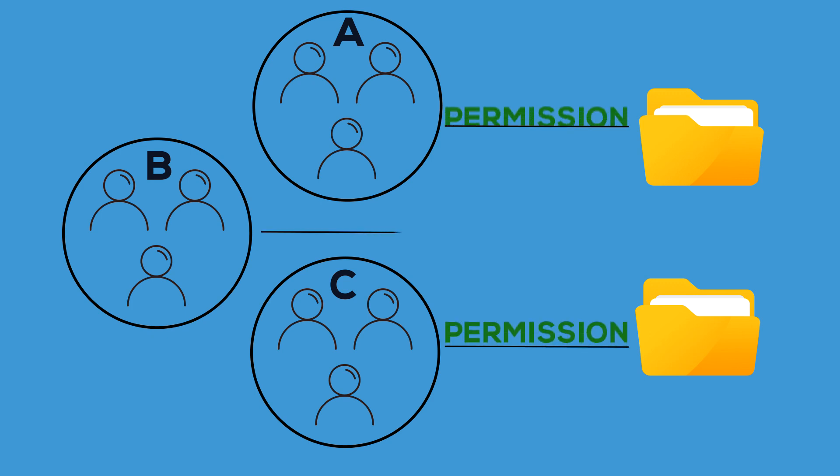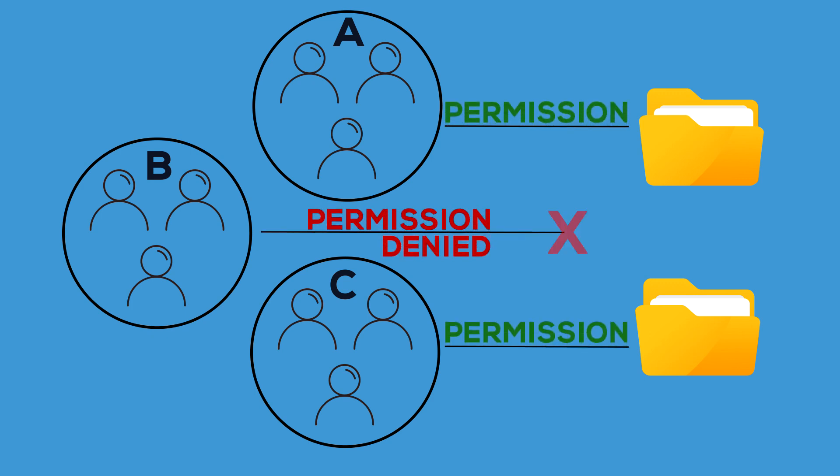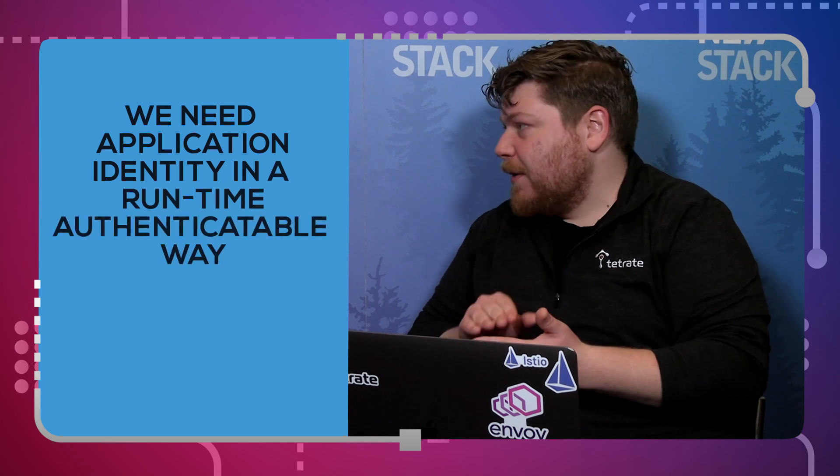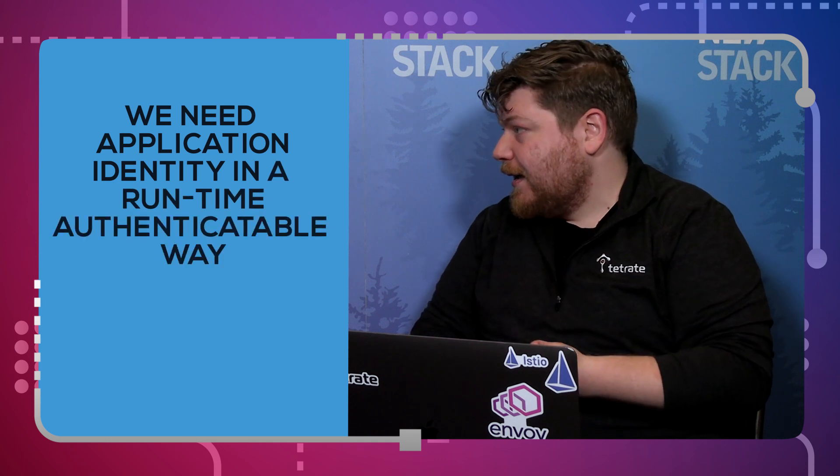In order to do that, you need some kind of help in understanding what permissions are actually being used versus how much are being granted. I'll often say that the fundamental feature a service mesh brings is identity. We need application identity in a runtime-authenticatable way, everywhere, ubiquitously.